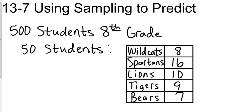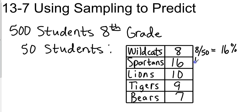We polled 50 students, so Wildcats would be 8 out of 50. If we take 8 and divide it by 50, that gives us 16%. Again, these are just estimations.